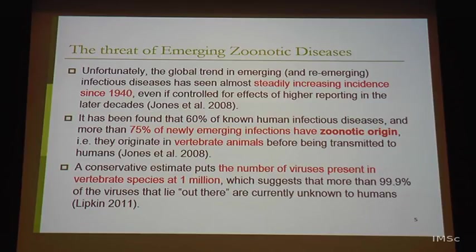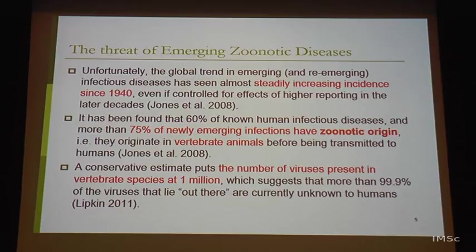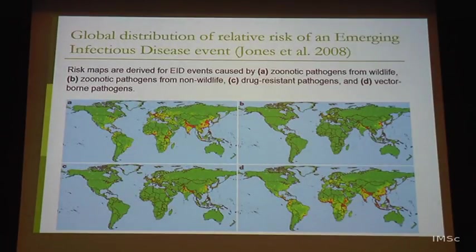The context of our work is the threat of emerging zoonotic diseases. The trend has been particularly bad — steadily increasing incidence since the 1940s, even controlling for higher reporting. In India, reporting agencies exist but their data integration is not always timely. It has been found that 60% of known human infectious diseases and more than 75% of newly emerging infectious diseases have zoonotic origin.